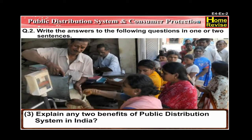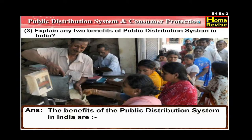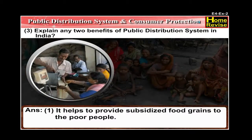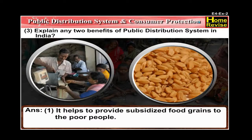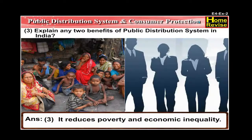Number 3: Explain any two benefits of the public distribution system in India. The answer is: the benefits of the public distribution system in India are — number one, it helps to provide subsidized food grains to the poor people; number two, it provides employment to fair price shop owners, their employees, and other related workers; and number three, it reduces poverty and economic inequality.